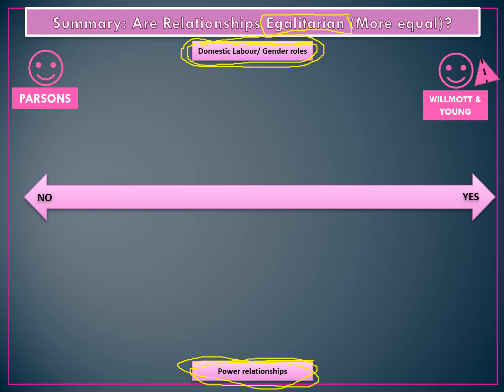As an alternative functionalist view, we have Wilmot and Young, who are slightly more contemporary. They talk about the symmetrical family, where men and women have become more equal. Men are taking a greater role in domestic work and house care, and women have entered the field of paid work. This fits the neo-conventional family model where both work, both do childcare, and both do domestic work. Wilmot and Young saw that in the 1970s a march of progress was taking place — we were moving towards equality. They also linked this to the development of the 'new man,' who is more home-centred, child-care focused, and more involved in domestic work, as masculinity changes.